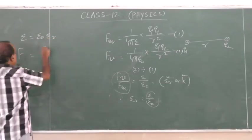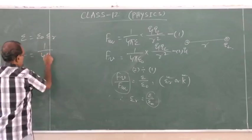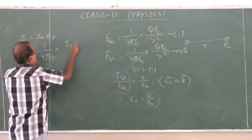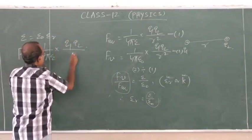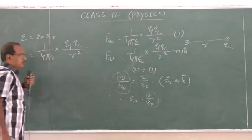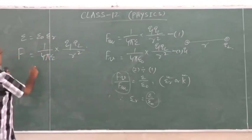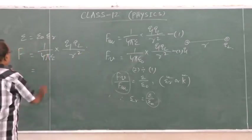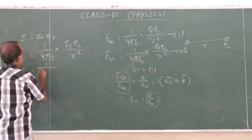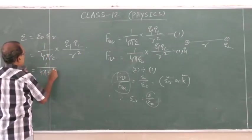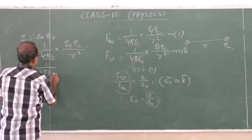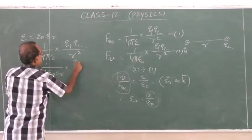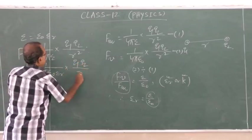The force in the medium is given by F = Q₁·Q₂ / r², which can be written as F = (1 / 4π ε₀ εr) · Q₁·Q₂ / r².